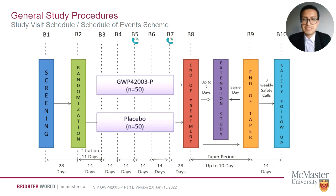After the end of treatment visit, B8, the taper period will begin with a duration of 10 days. This will be interrupted if the participant decides to participate in the extended study. At the end of tapering, the participant will come to study visit number B9, end of taper. The follow-up period starts with a duration of 4 weeks, with weekly follow-up safety calls and a last on-site study visit B10, which could also be performed by telephone call.